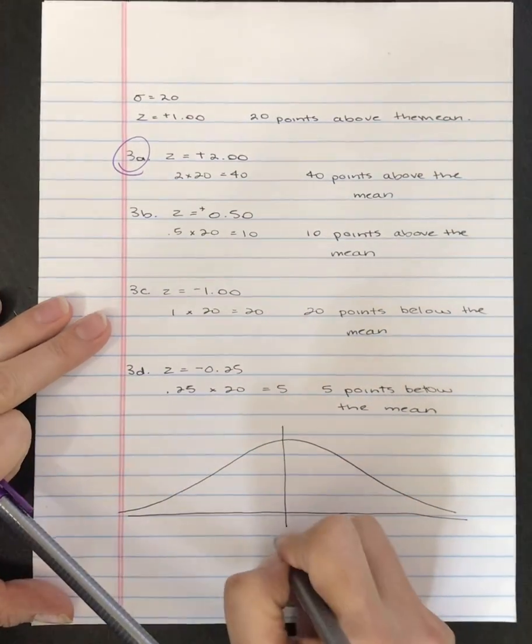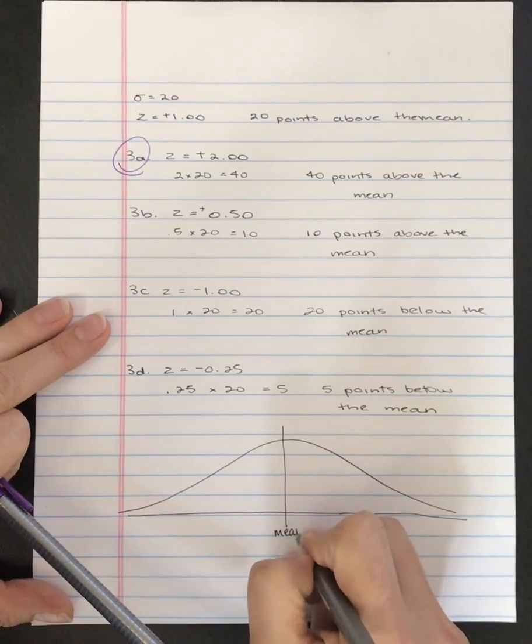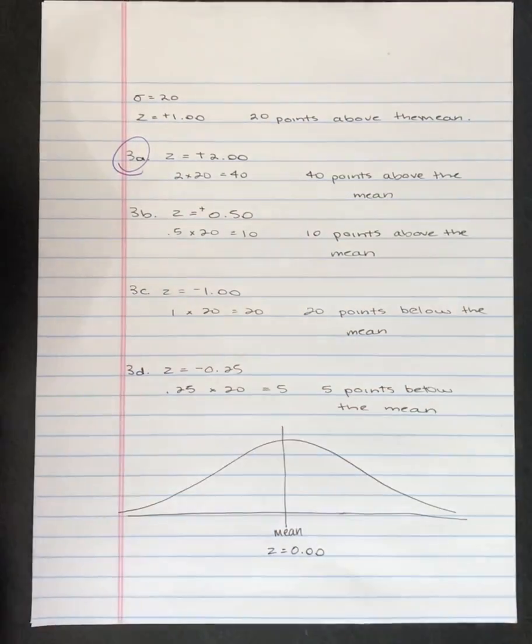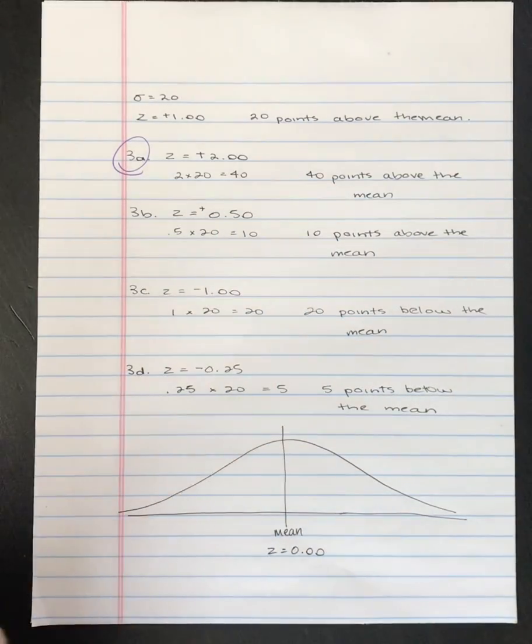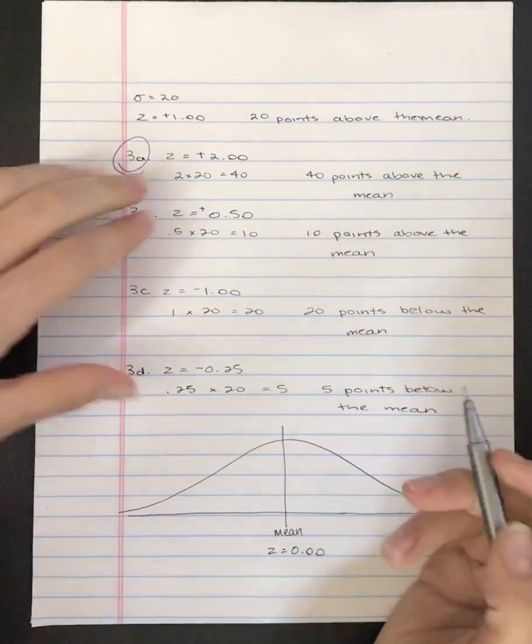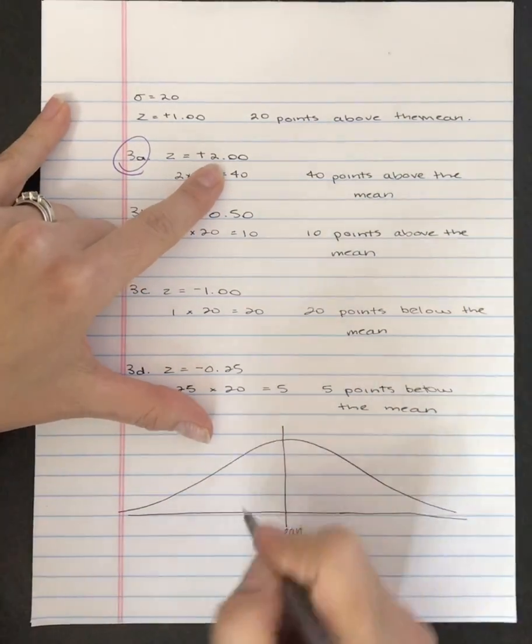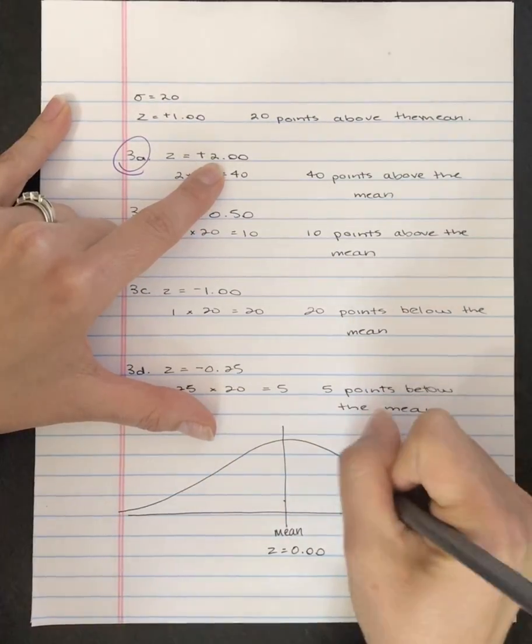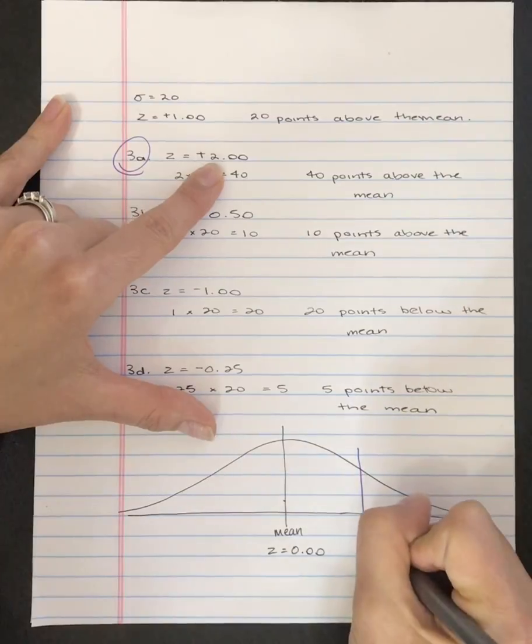So if we take 3a and we mark that in purple. So this is our mean. This is our z-score equal to 0.00. And this graph is, bear with me, it's symmetrical. So a z-score of plus 2 is to the right of the mean. And it's going to be out here.